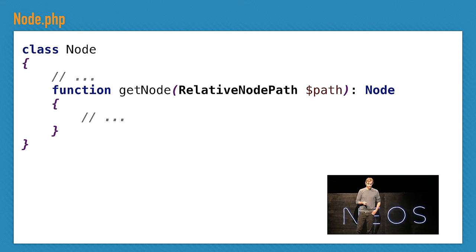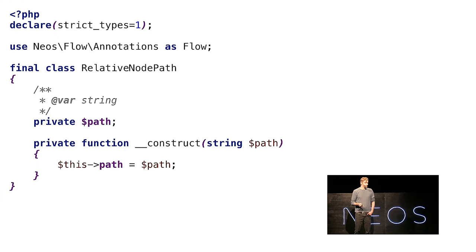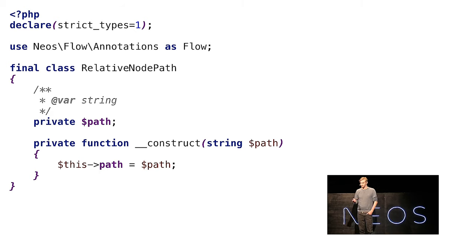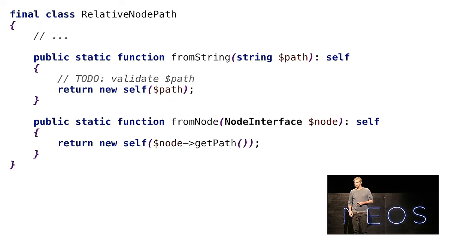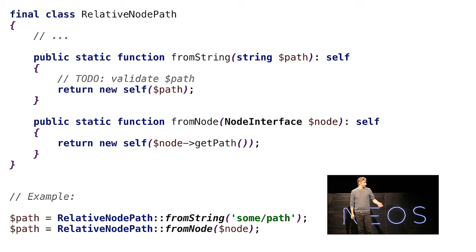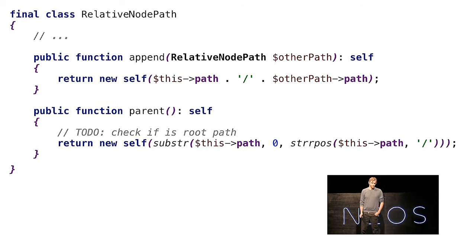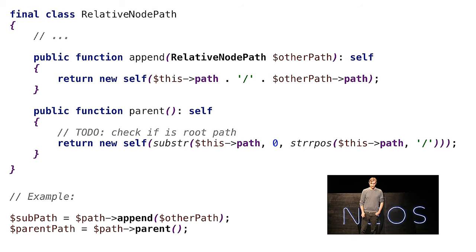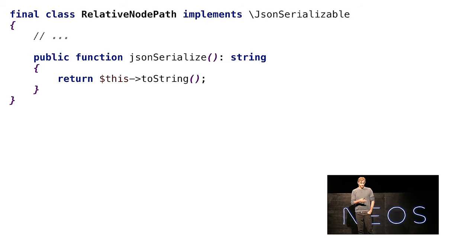Just create an object that represents what this thing should be — a relative node path, for example. It's just a class. We make it final because we don't want anyone to extend it, and we create a private constructor. I like private constructors because then we can create multiple named constructors, so you can add new constructors without breaking backwards compatibility. It's much easier to use — you can say, create a relative path from an existing node. Then you can add convenience methods: traverse, append sub-paths to existing paths, get the parent path. Maybe you want to implement the JSON serializable interface, so if you encode this path to JSON it's just represented as a string again.